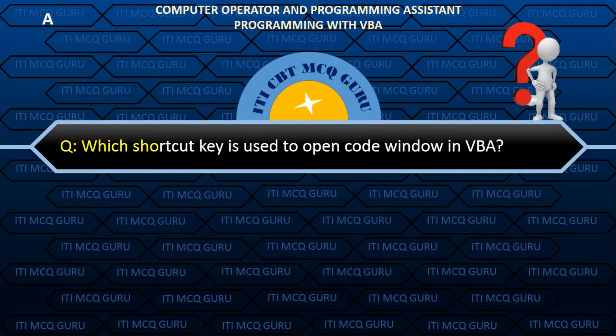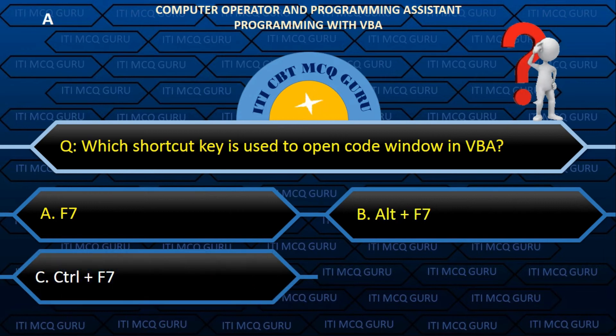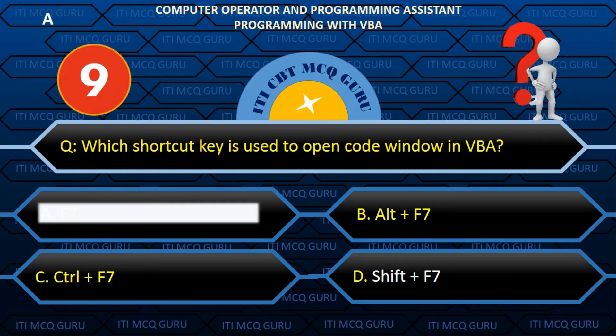Which shortcut key is used to open the code window in VBA? Answer: A. F7.